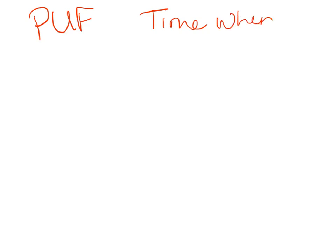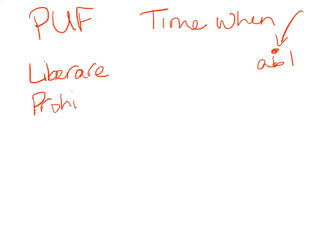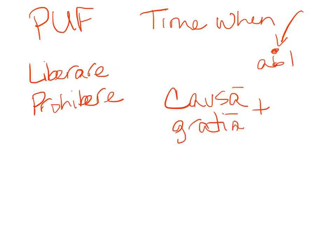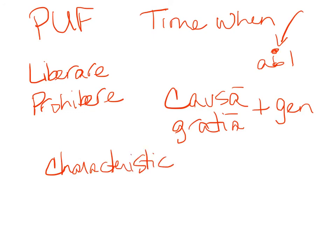Quick recap of the less commonly remembered uses of the ablative: first, our PUFF verbs — potior, utor, and frior — which take an ablative object. Then ablative of time when: a point in time takes the ablative case. We have separation with liberare and prohibere. We have 'for the sake of' with causa and gratia in the ablative, both taking a genitive. And finally, ablative of characteristic or description. Those are the uses of the ablative most likely to show up on the National Latin Exam levels 3 and 4. Good luck and have fun!